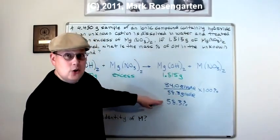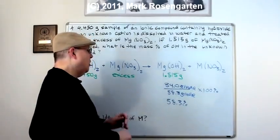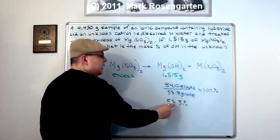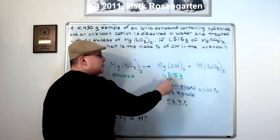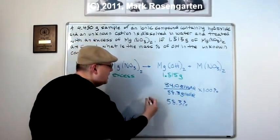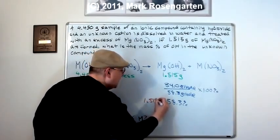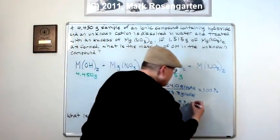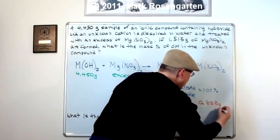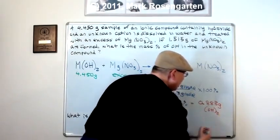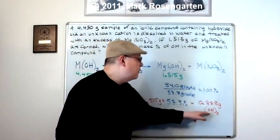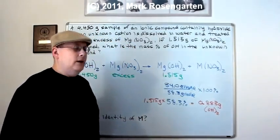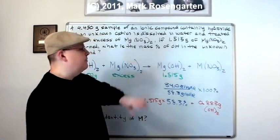The hydroxide makes up 58.3% by mass of the total mass of the magnesium hydroxide. This is just a weird coincidence. So if the hydroxide makes up 58.3% of the mass, that means it's going to make up 58.3% of the 1.515 gram mass of this sample. So we take 1.515 grams, and we take 58.3% of that. And that gives us 0.883 grams of hydroxide. That includes both of the hydroxide ions.